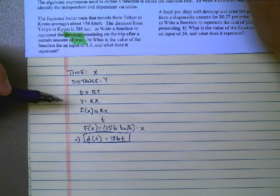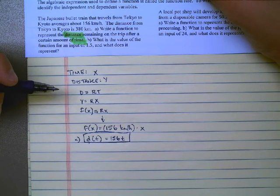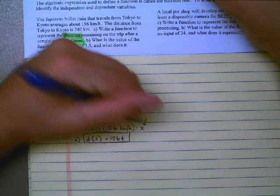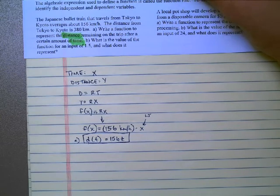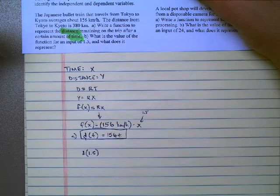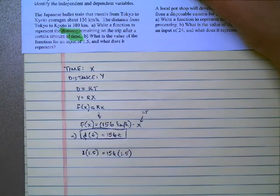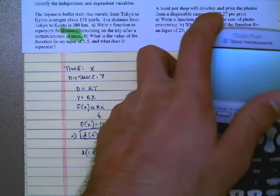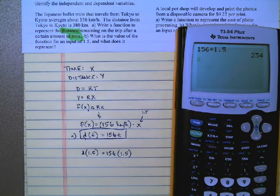Part B says what is the value of the function for an input of 1.5 and what does it represent? If I'm going to take an input of 1.5, that means I'm going to replace this with 1.5, or I'm going to replace the T in the one that I've circled. So the distance for an input of 1.5 is equal to 156 times 1.5. I'll use my calculator here. Is equal to 234.